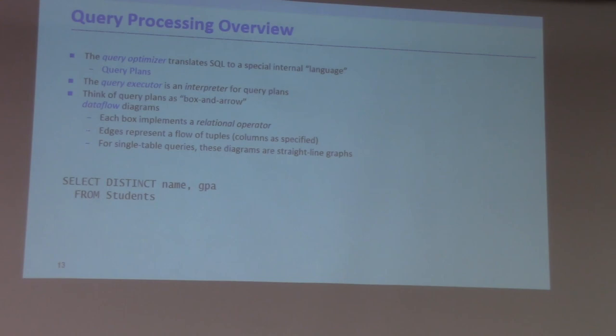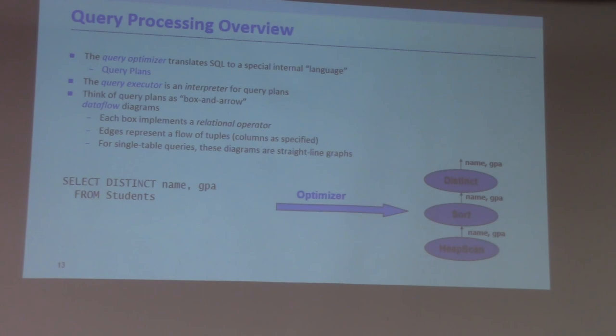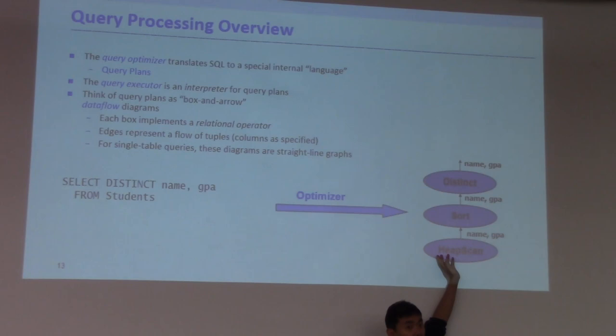Let's look at a basic single-table query. As we talked about before, this will be converted to a query plan tree. In this particular case, we produce a query plan tree like this: I'm going to do a heap file scan over the base input, the student table, and put out these two attributes — name and GPA.